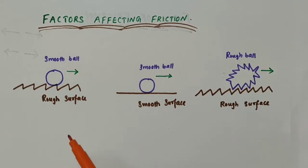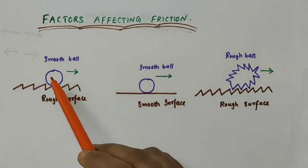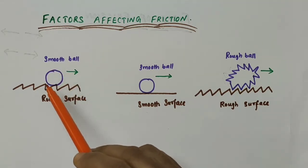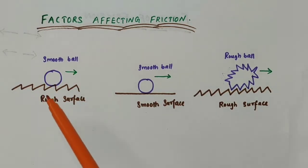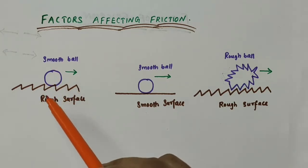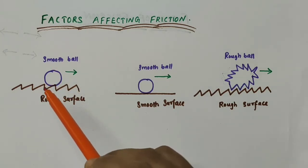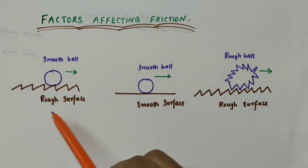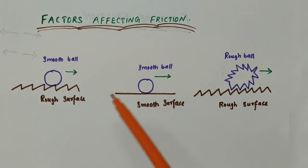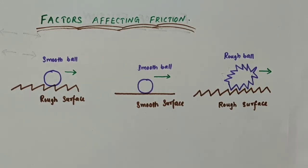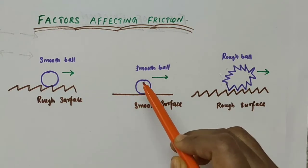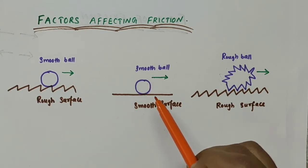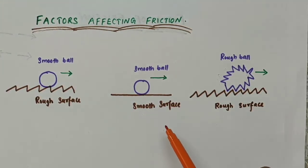First, consider the situation of a ball which has a very smooth surface — a smooth ball. It moves on a rough surface. Next, consider the situation in which a ball with a smooth surface moves on a smooth surface.